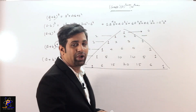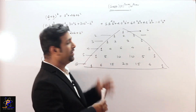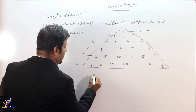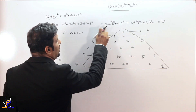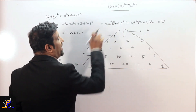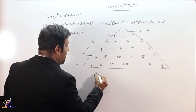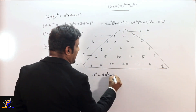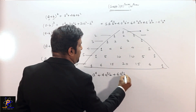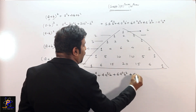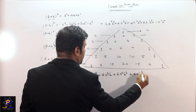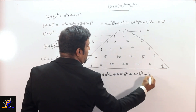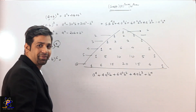So now it is very simple. The expansion of (a+b)⁴ becomes: 1·a⁴·b⁰ + 4·a³·b + 6·a²·b² + 4·a·b³ + 1·b⁴. Since anything raised to 0 is 1, this simplifies to a⁴ + 4a³b + 6a²b² + 4ab³ + b⁴.